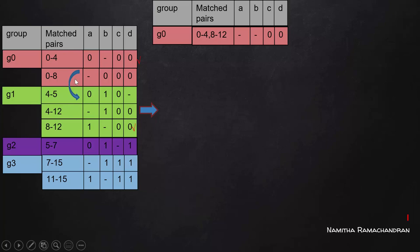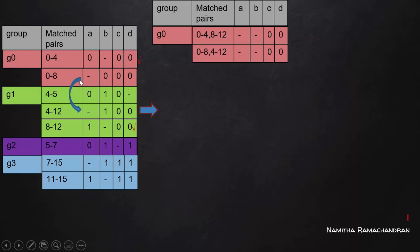Continuing: (0,8) vs. (4,5) — more than one mismatch, discard. (0,8) vs. (4,12) — mismatch in only one location, so enter matched pair (0,8,4,12) as –0–0. Tick marks placed on (0,8) and (4,12). No further matches are found, so this is the final comparison stage.